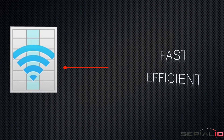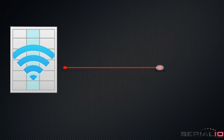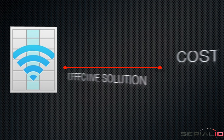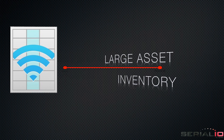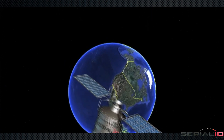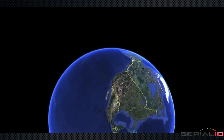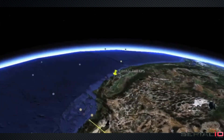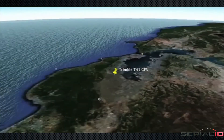Mobile Grid provides a fast, efficient, and cost-effective solution for large asset inventory. Results can be viewed on an inventory map with pinpoint GPS accuracy using a browser.